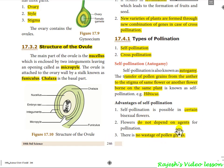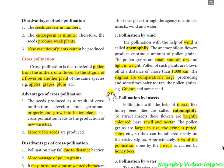Advantages of self-pollination: it does not depend on any external agents like insects, wind, or water. There is no wastage of pollen grains. Since it is taking place in a single plant, the number of pollen grains needed is very less and they will certainly stick on the stigma.